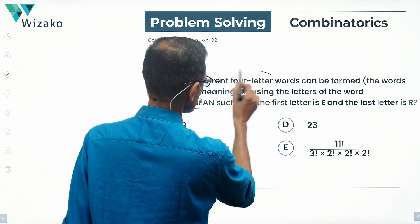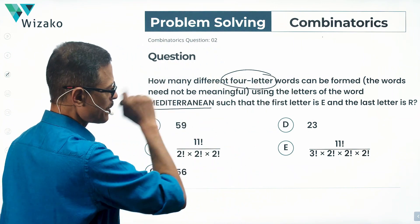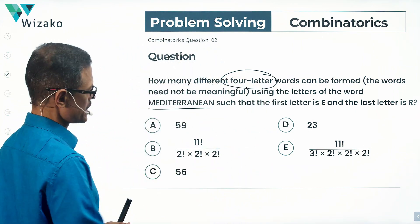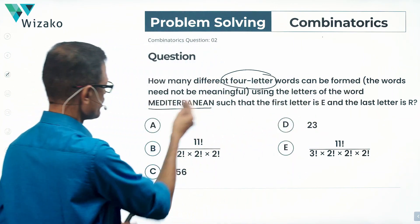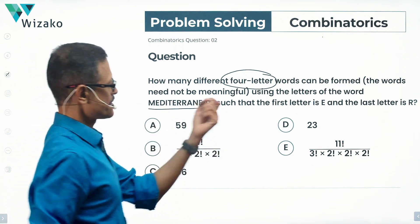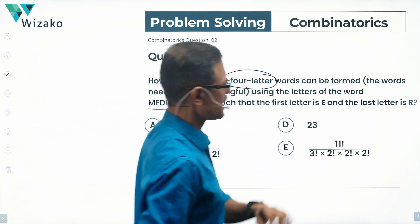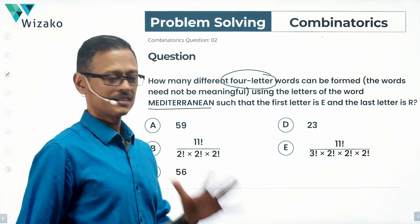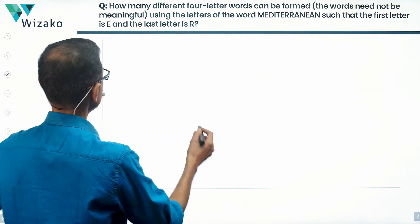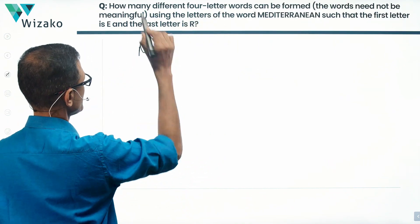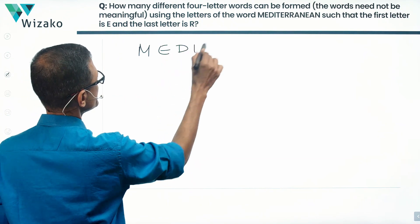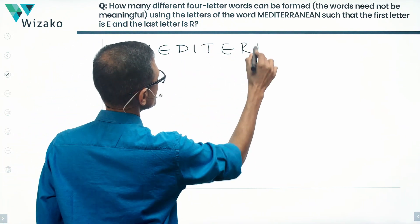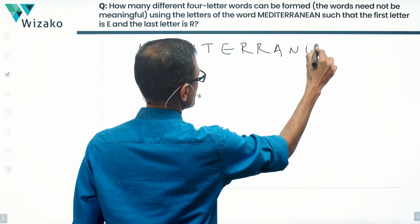How many four-letter words can be formed using the letters of the word Mediterranean such that the first letter is E and the last letter is R? The words need not be meaningful, obviously. Let's start with this word Mediterranean as it is given. We'll go to the constraint in a while.